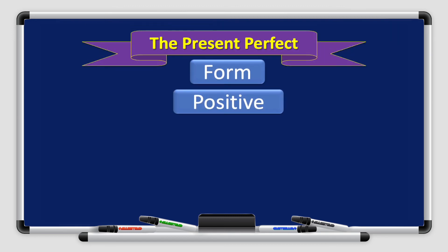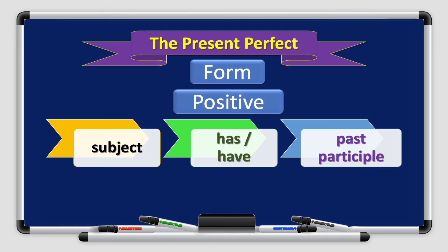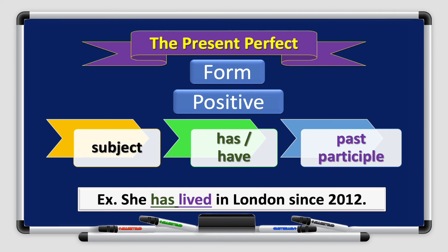Now, the form or how to form a present perfect sentence. You start with the subject, followed by has or have, depending on what the subject takes, followed by the past participle. For example, she has lived. Lived is our past participle. In London since 2012.